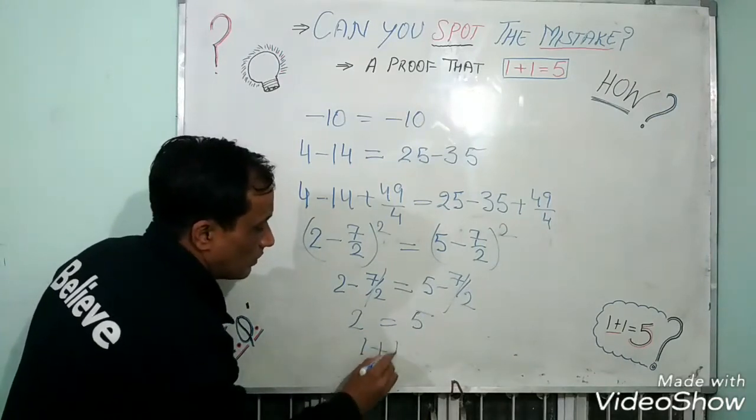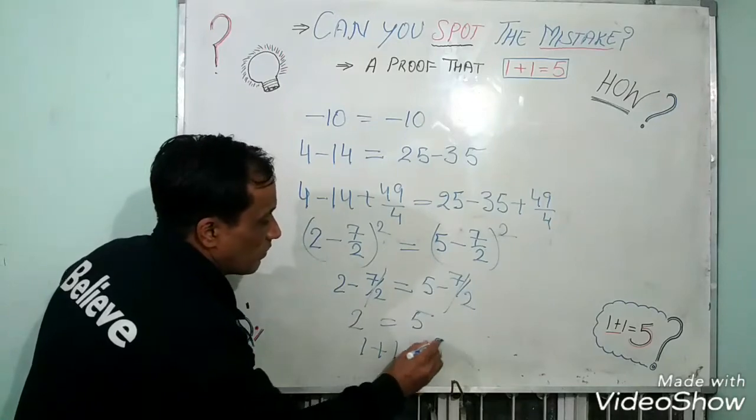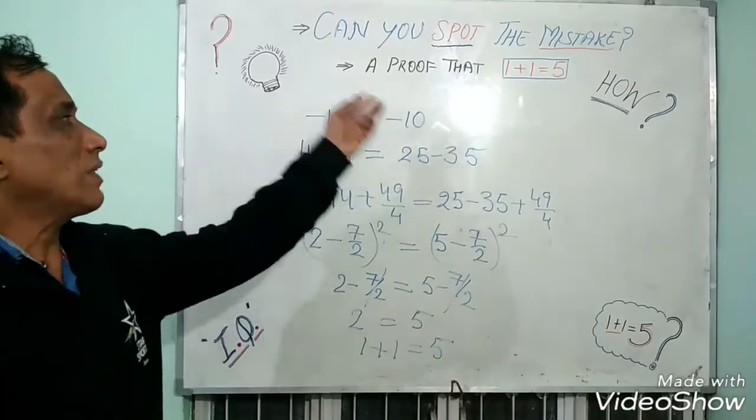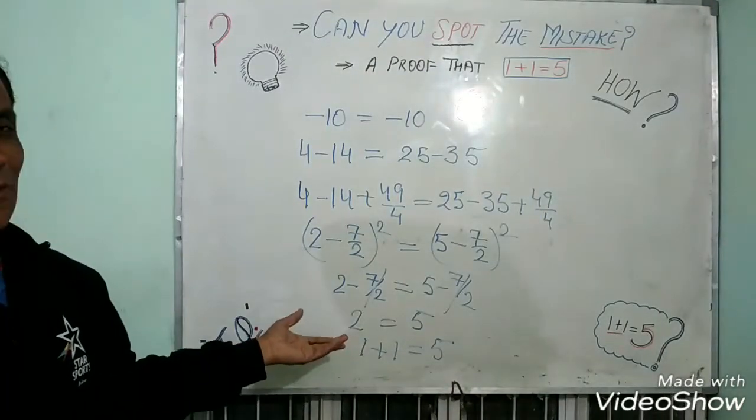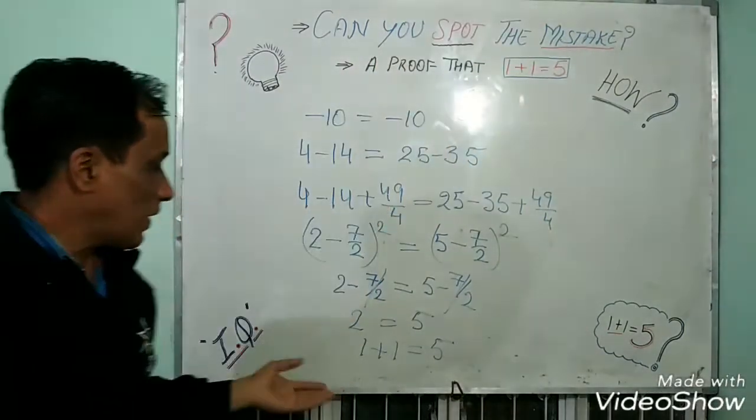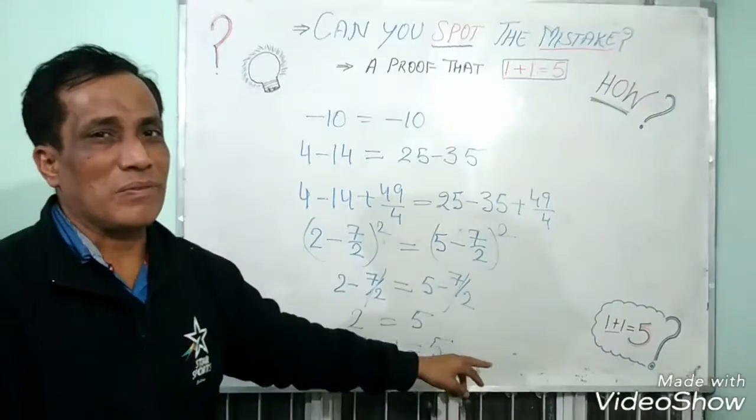Or 1 plus 1 is equal to 5. But the universal truth is 1 plus 1 is always 2. But here 1 plus 1 is 5.